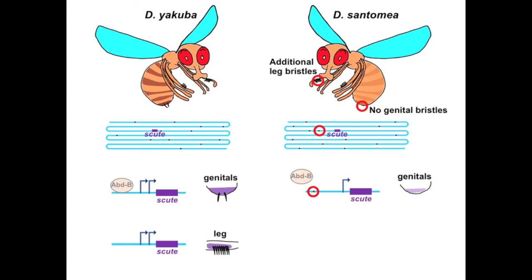The mutation disrupts a binding site for the transcriptional activator abdominal B, thus decreasing SCUT expression. This same mutation increases expression of SCUT in the developing foreleg, probably by altering the binding of a different transcription factor, thus leading to extra leg bristles in Drosophila santomea, compared to Drosophila yakuba.